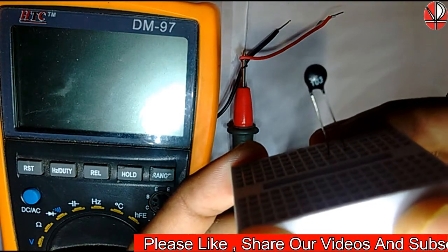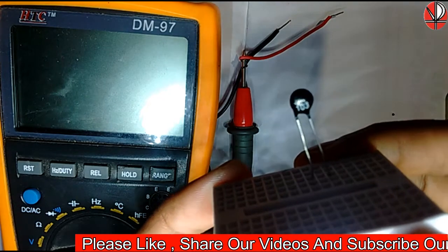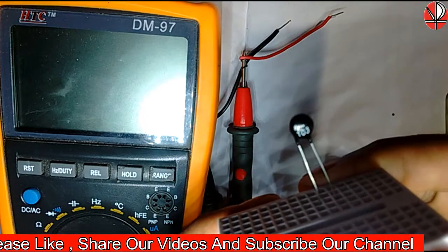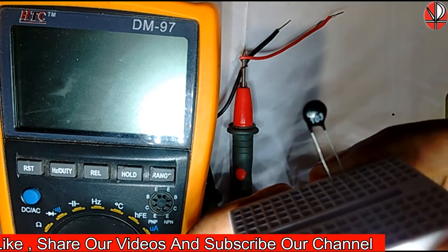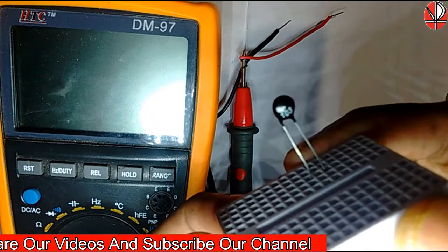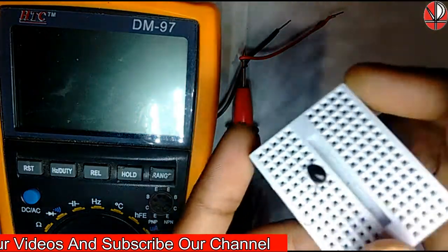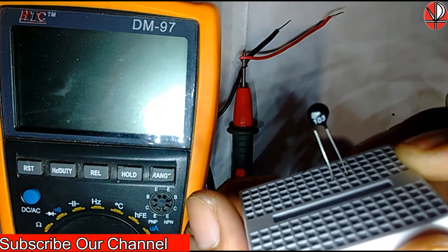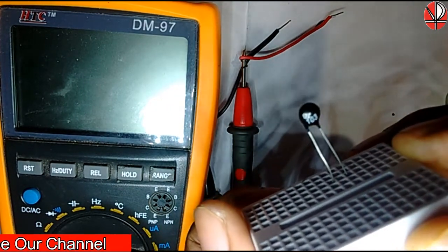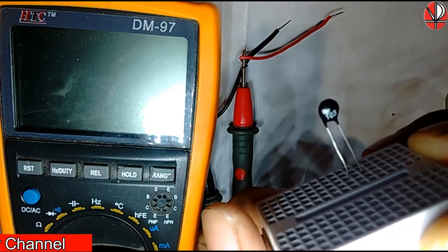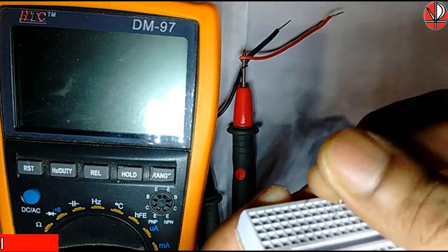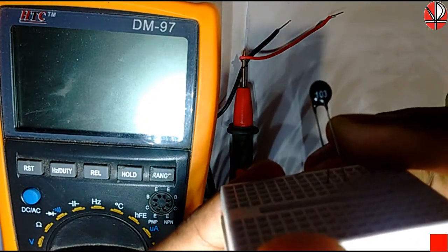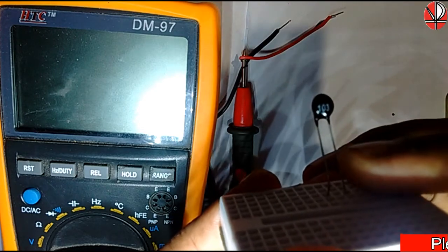If the resistance of the thermistor goes down with increasing temperature, it is called a negative temperature coefficient thermistor. And if the resistance of the thermistor goes up with increasing temperature, it is a positive temperature coefficient thermistor.